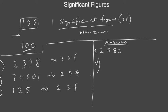For 74501 to two significant figures, count from the left: one, two — that's 7 and 4. Ask yourself: do I need to increase this 4 by one? Check the number that follows 4, which is 5. Since we have a number greater than or equal to 5, we increase the 4 by one. That becomes 5. Then convert the rest of the digits to zero. The answer is 75000.